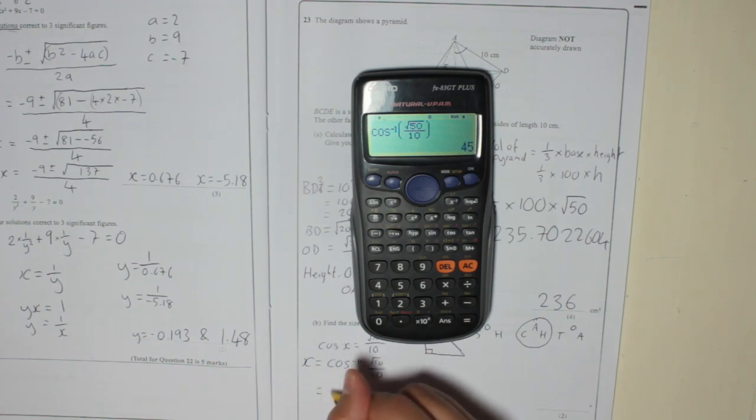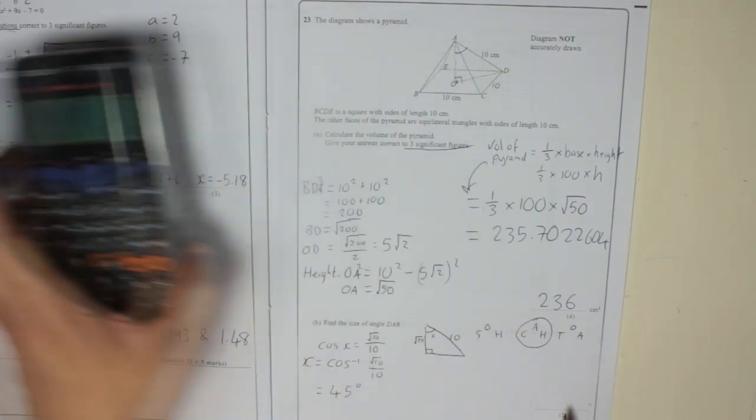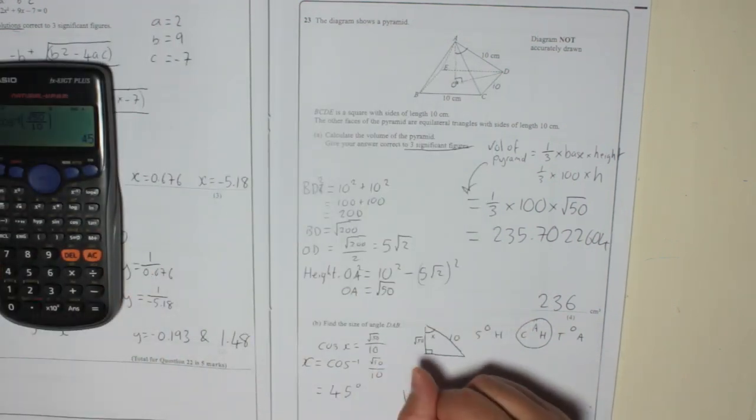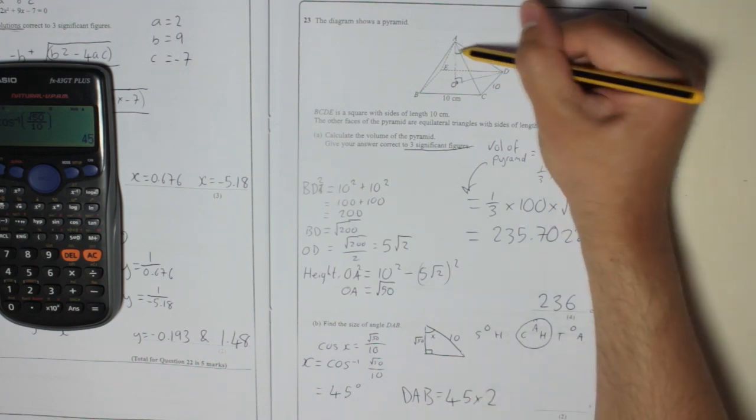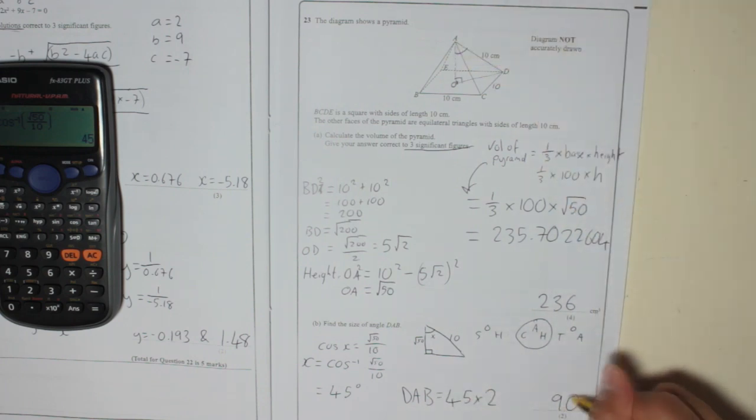So x is 45, which means our answer, DAB, is 45 times by 2, because we've only found half of it, which is 90 degrees.